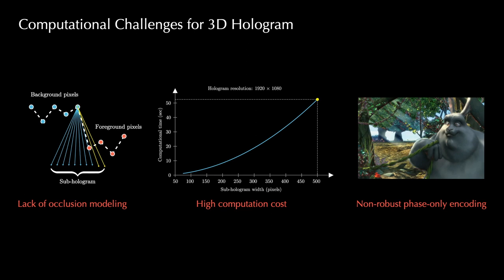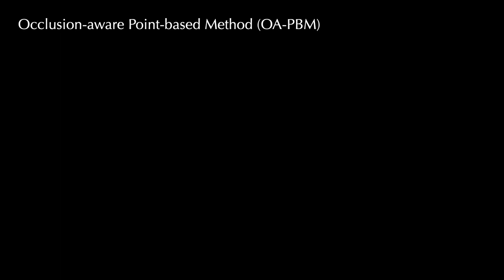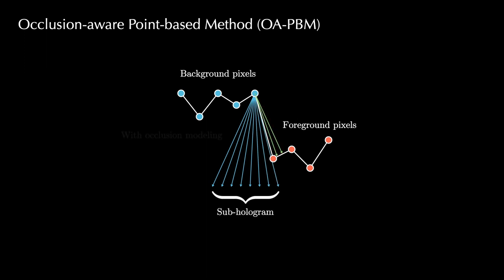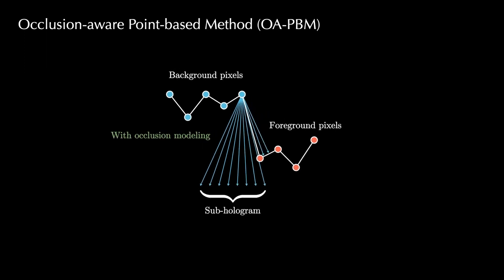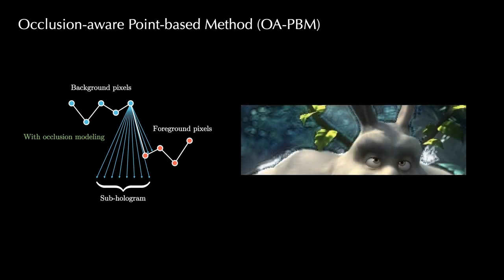In this paper, we improve upon these methods and combine with deep learning to enable real-time photorealistic 3D holography. We first address occlusion modeling by reconstructing a surface mesh before diffraction simulation and detecting foreground occlusion during sub-hologram calculation. This prevents background leakage and produces a clean foreground reconstruction.